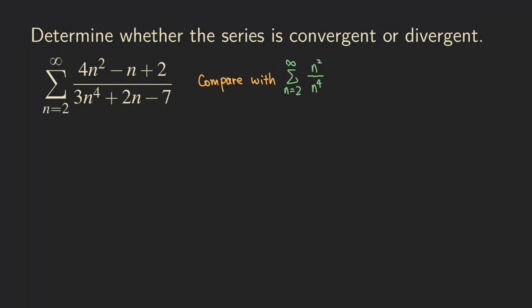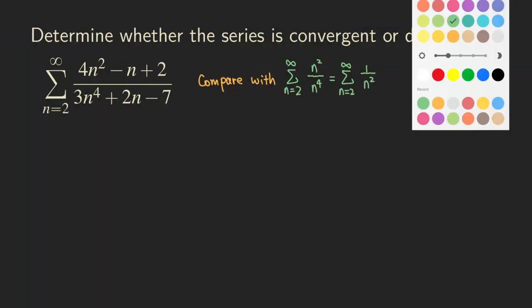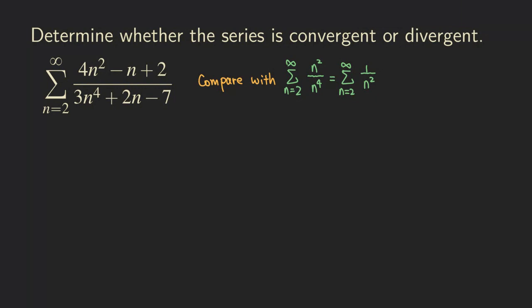You actually cannot tell by just looking at the form it has right now, because we need to simplify it first so that we can see the form. When we simplify it, it turns into one over n squared. As you can see, that's a p-series with p equals two. So we say that this is a convergent p-series.